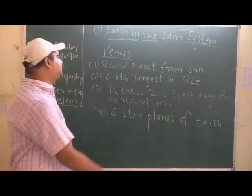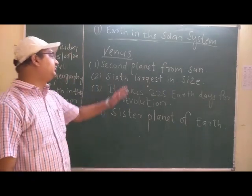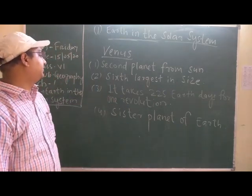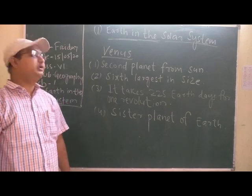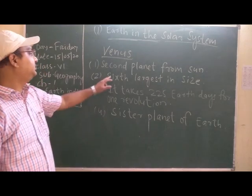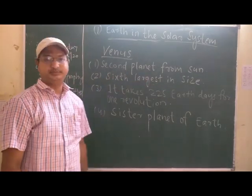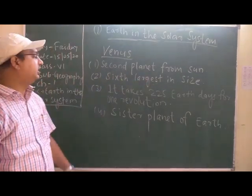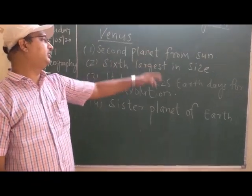Today we will study about Venus. Venus is the second planet from the sun. Look at the blackboard and the points I have written here — Venus is the second planet from the sun. In the last class I told you a simple way to memorize the names of the planets.